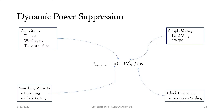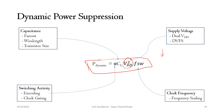Now let's see how we can suppress or optimize the dynamic power dissipation. As we know, this is our average power dissipation in the circuit due to a particular signal switching. In this formula we have VDD squared, which is nothing but the supply voltage. So if we lower the supply voltage, our dynamic power dissipation gets minimized.